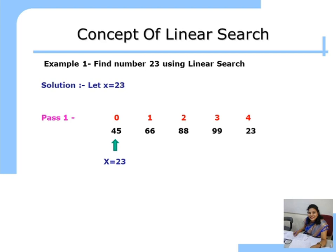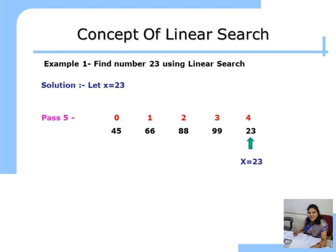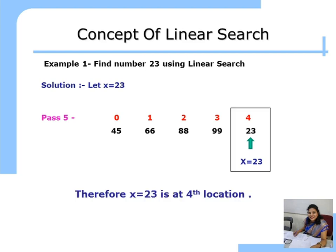Are they same? No. So we go to pass 2 and compare x with the 1st location: 23 and 66. Not the same. In pass 3, we compare 23 and 88 — not the same. In pass 4, we compare 23 with the 3rd location, which is 99 — not the same. In pass 5, we compare 23 with the element at the 4th location, which is 23. They are the same. So we found the number 23 at the 4th location.